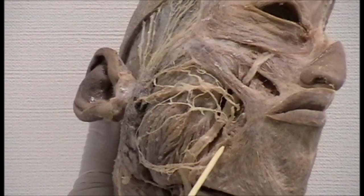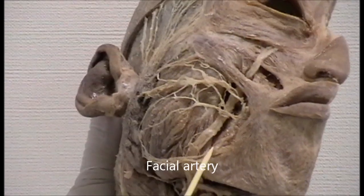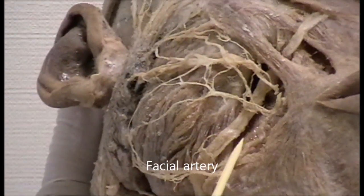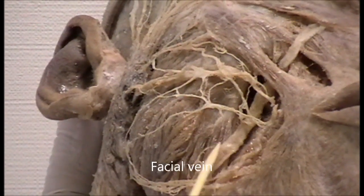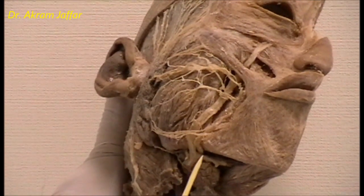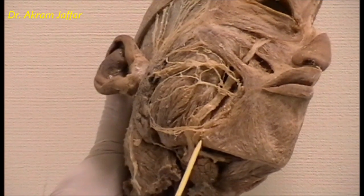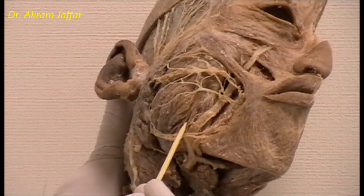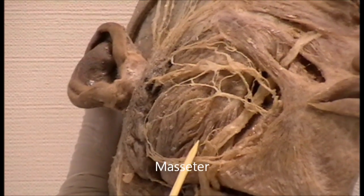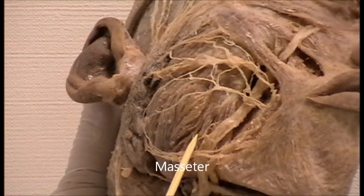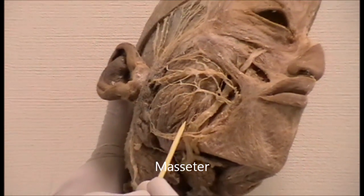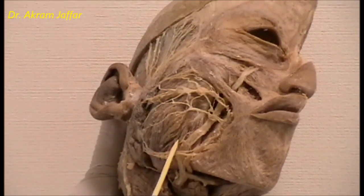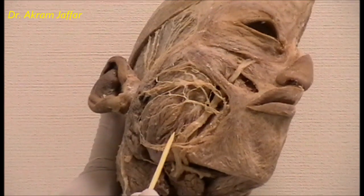This is the facial artery — note the tortuous course of this artery; it is located anterior to the facial vein. The artery crosses the inferior border of the mandible in front of this muscle. This muscle located in the face is the masseter muscle, but it is not a muscle of facial expression — it moves the mandible and is a muscle of mastication.